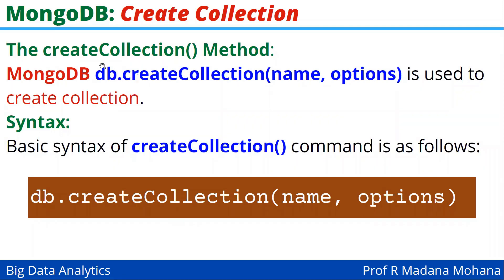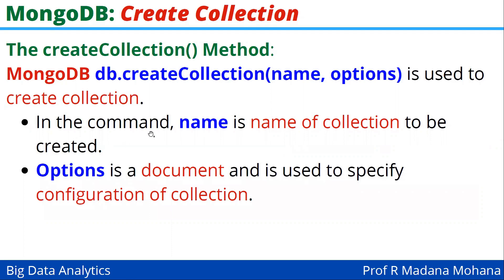The createCollection method — note that the 'C' in Collection is capital. In MongoDB, db.createCollection consists of two parameters: one is name, another is options, and it is used to create a collection. The basic syntax is db.createCollection within parentheses. The first argument is the name, the second is options. Here, name is the name of the collection to be created, whereas options is a document used to specify configuration of the collection.